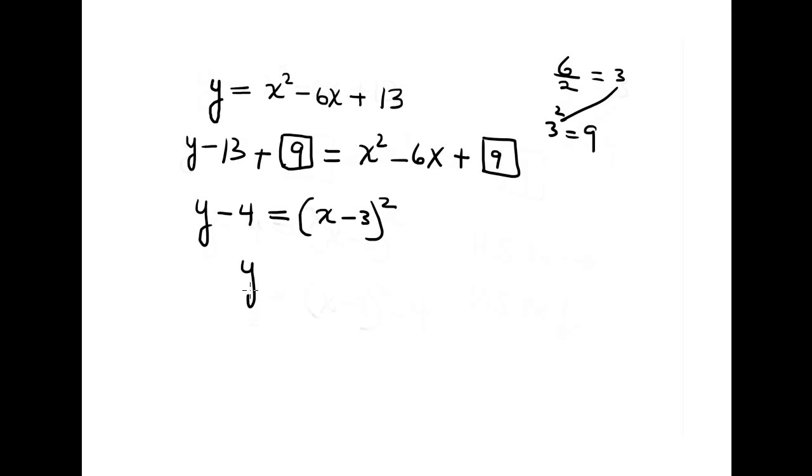I'll bring 4 to the other side, of course positive 4, x minus 3 is square plus 4. Now we have horizontal shift 3 units to the right because it's minus, and vertical shift 4 units up because it's positive.